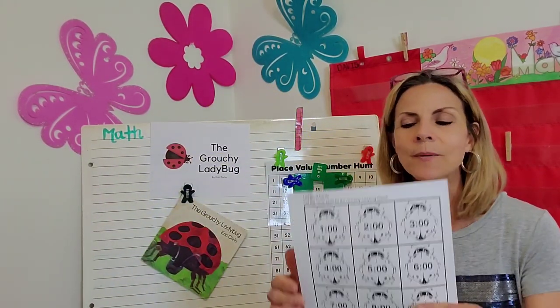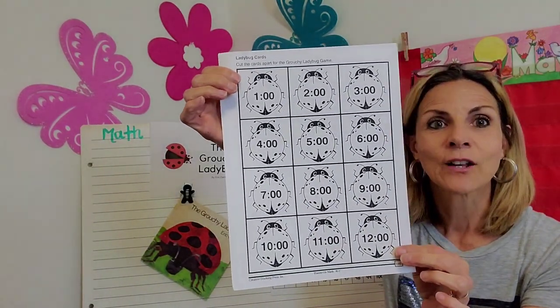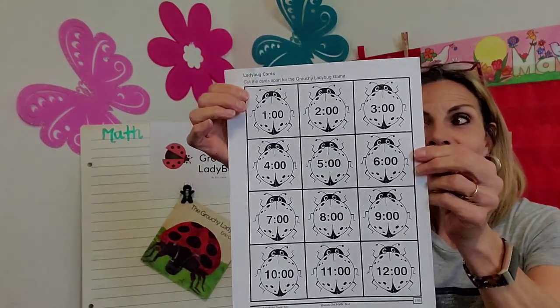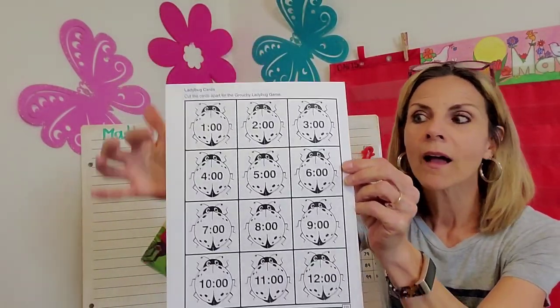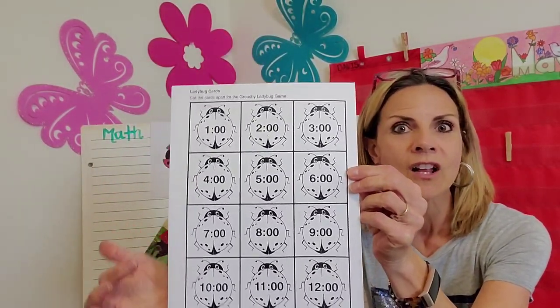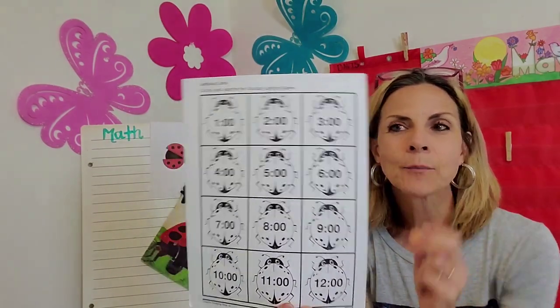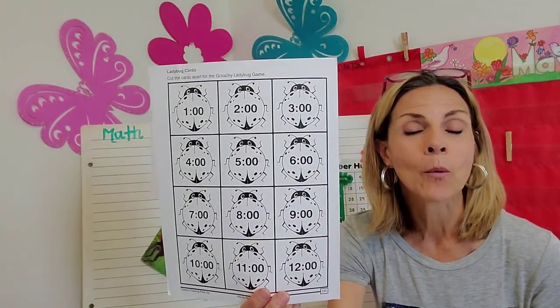And then change it up just a bit. Then go back to this sheet. And then go down. You can go one o'clock, and then four o'clock, and seven o'clock. Just change it up. And practice your time on the hour skills.